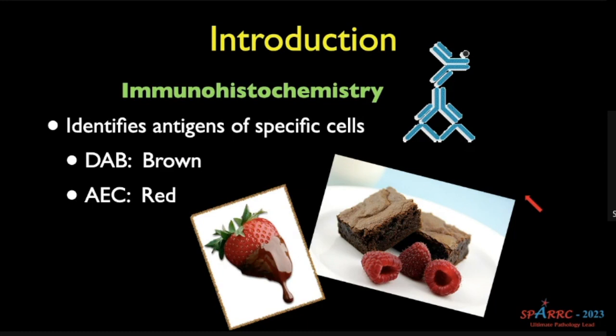Immunohistochemistry is about looking for antigens of a specific cell. Each cell has a specific material we call antigen, and through the antigen-antibody interaction we highlight that particular antigen — that is the basic principle of immunohistochemistry.